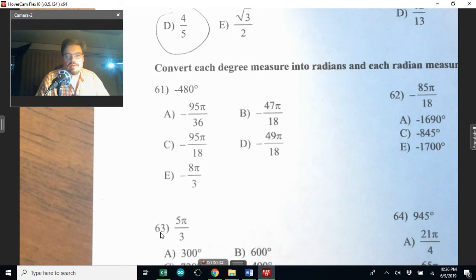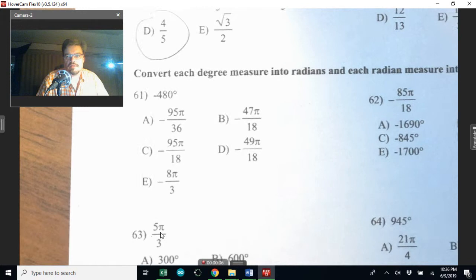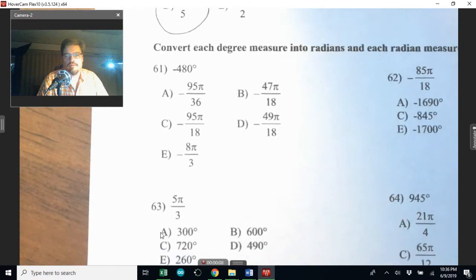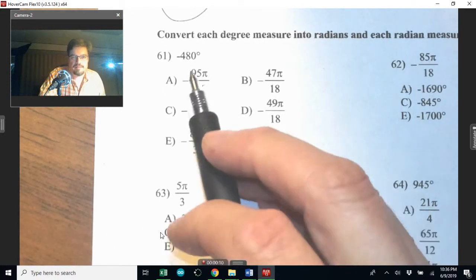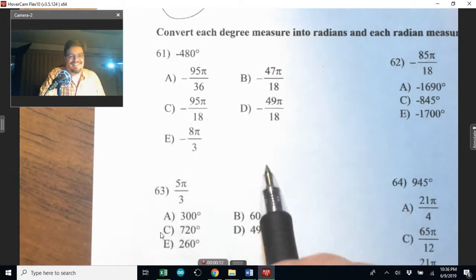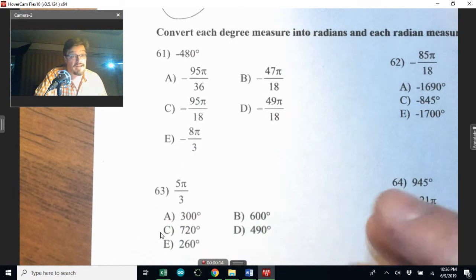All right, so convert each degree measure into radians and each radian measure into degrees. Hopefully you've figured out that anything with a degree symbol is in degrees. Anything with a pi is in radians.